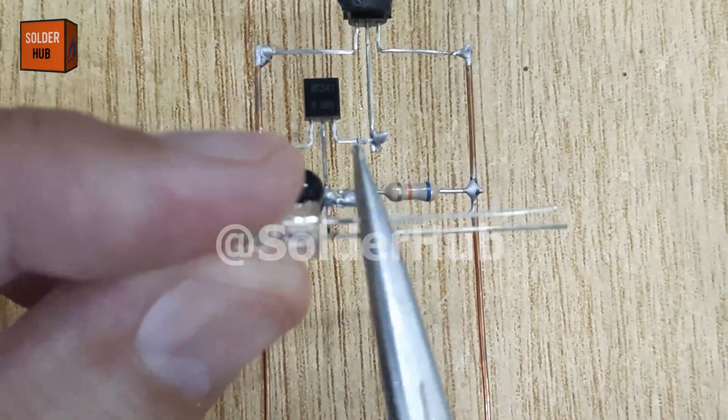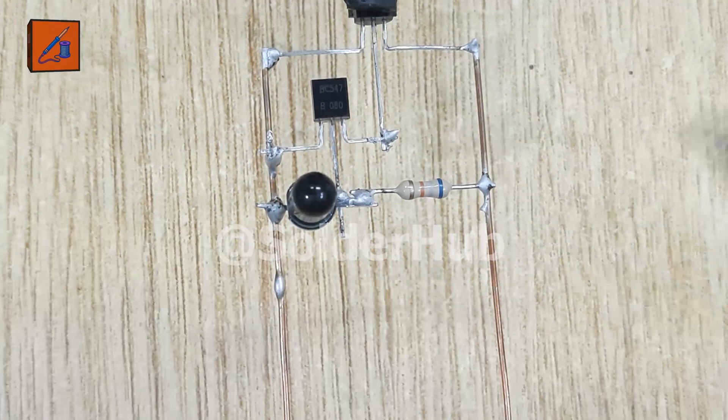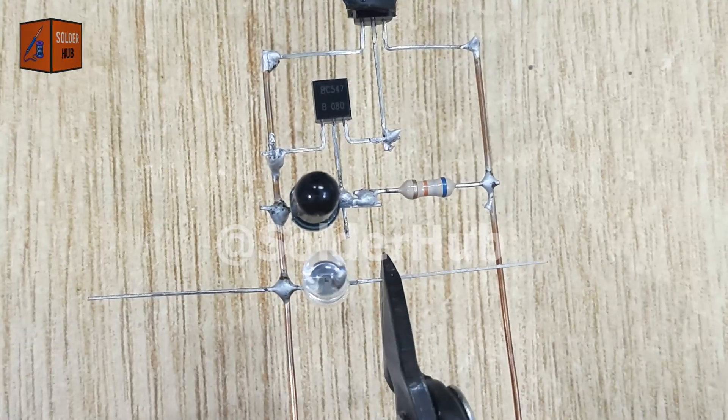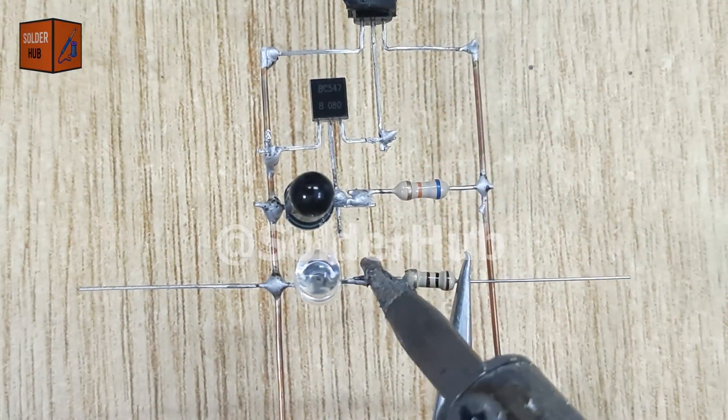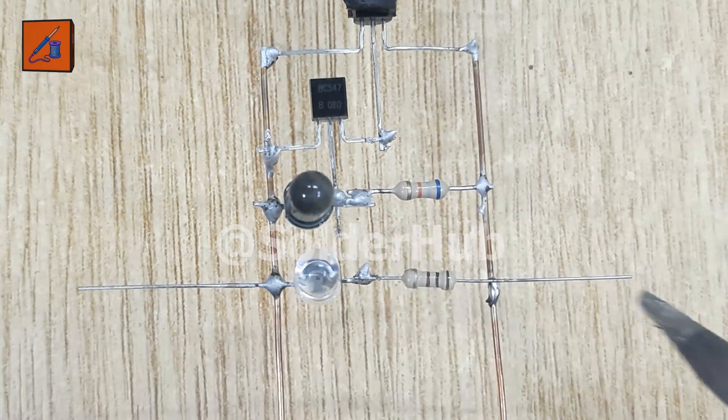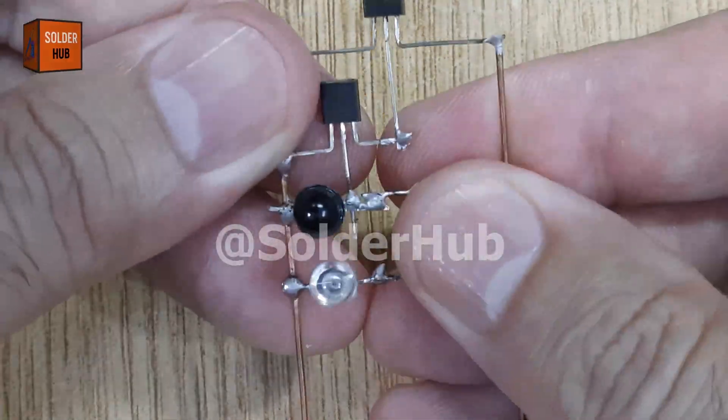Now, let's add the IR transmitter diode. Its positive pin will connect to the copper wire at the collector of both transistors. I'll cut its negative pin short and then solder a 100 ohm resistor to it. The other end of this resistor will connect to the copper wire coming from the emitter of the first transistor. This part is crucial because it sets the correct current for the IR LED.